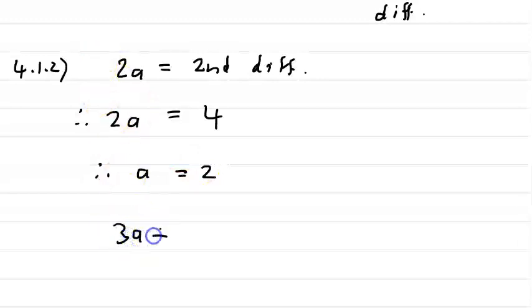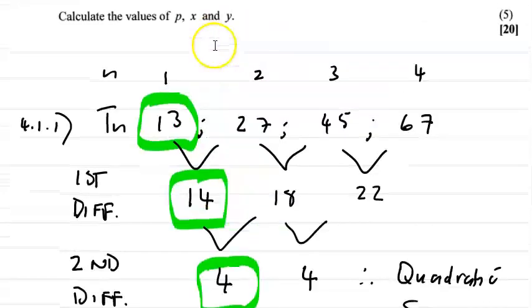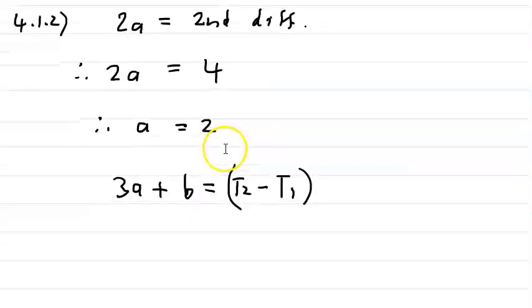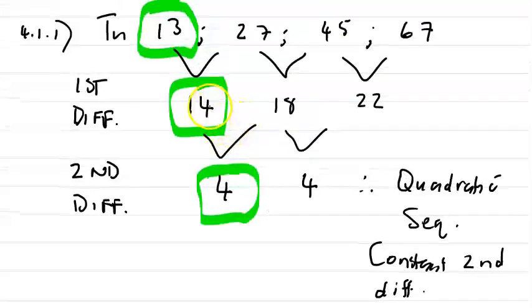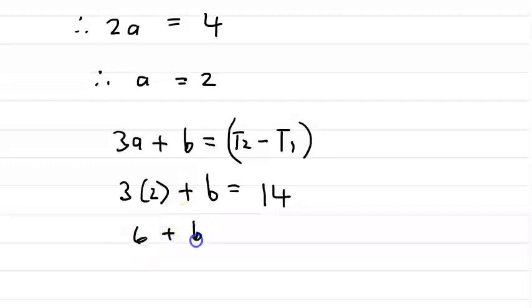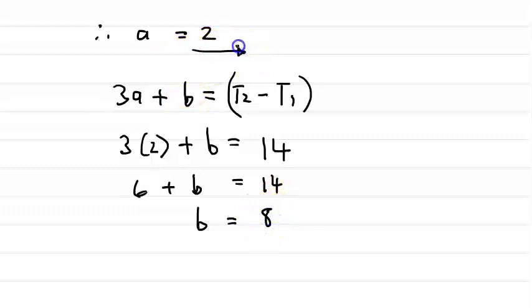Step 2: 3a plus b equals T2 minus T1. T2 minus T1, the first term of the first difference, is 27 minus 13 which is 14. So substituting: 3 times 2 plus b equals 14. That gives 6 plus b equals 14, therefore b equals 14 minus 6, which is 8. So we've solved for a and b.